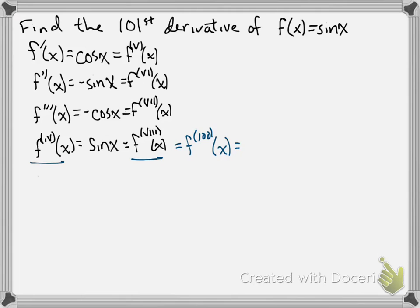and we know the derivative of sine x takes us right back up to here. So the hundred and first derivative of x is simply going to be, for this particular problem, cosine of x. And that's how we can follow a pattern with sine or the cosine function, and we can find the one thousand three hundred and twenty-first derivative very quickly.